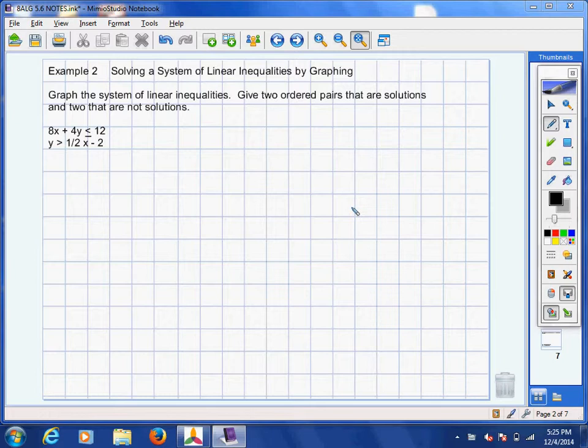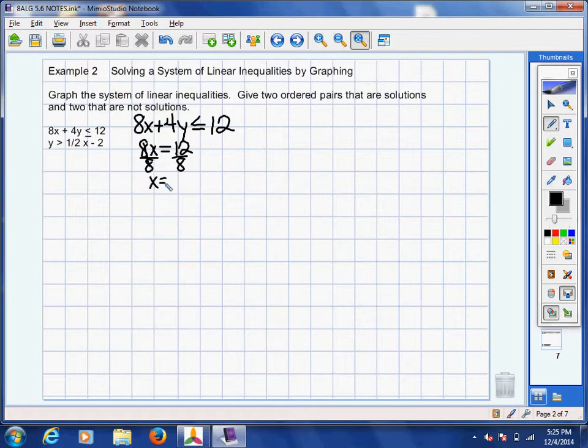Now they gave us two inequalities. We've got this 8x plus 4y is less than or equal to 12. That's standard form. In order for me to graph that, I am going to do the cover-up method and find my x-intercept and my y-intercept. So I'm going to cover up the 4y and I've got 8x is equal to 12, and then divide each side by 8. It's not going to go evenly, so if I reduce that by 4, I'll have 3 over 2, which is about one and a half. Three over 2 is exactly one and a half.